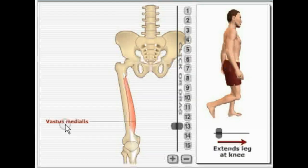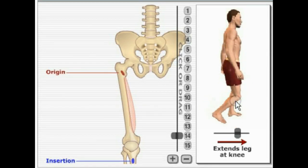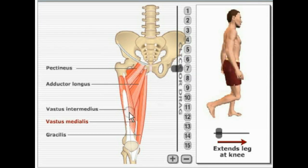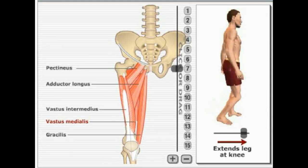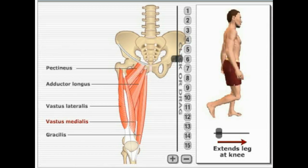Next in the quadricep group is the vastus medialis. It originates on the linea aspera of the femur and also on the intertrochanteric line of the femur, and inserts on the tibial tuberosity of the tibia. Its primary action is extension of the leg at the knee. Next is vastus intermedius, which has the same origin — the linea aspera of the femur — and inserts into the tibial tuberosity, also performing extension. The last is vastus lateralis, which originates on the anterior surface of the femur, inserts on the tibial tuberosity of the tibia, and is also primarily responsible for extension of the leg at the knee.